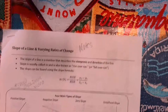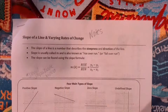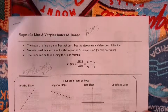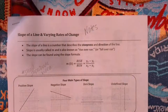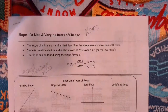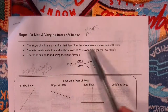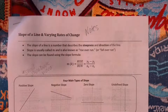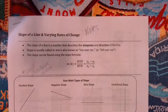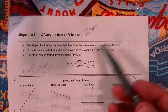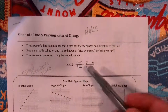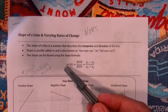We're going to talk about slope of a line today, which is also the rate of change. Slope of a line is basically the steepness of a line. If you've ever gone skiing, the mountains have slope. What we're going to do is put a number to it, so we call it rise over run.